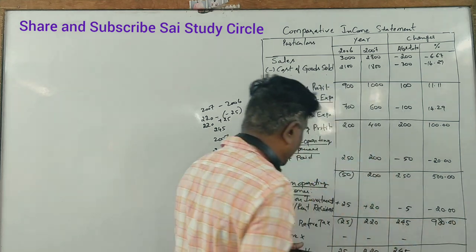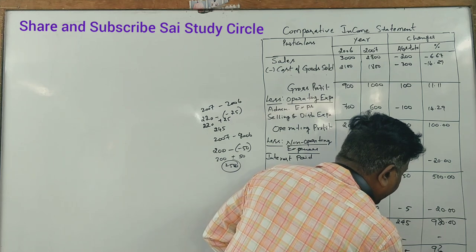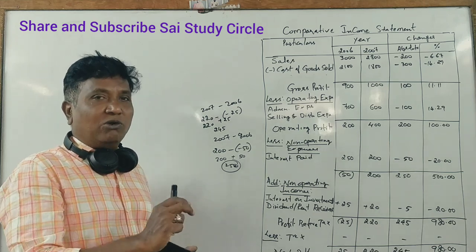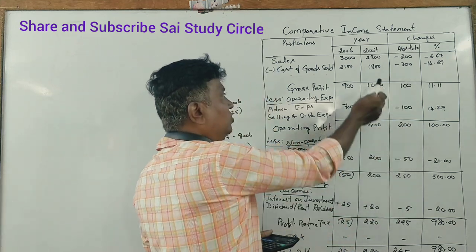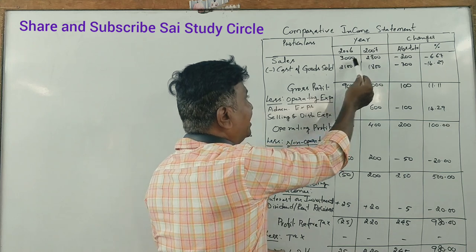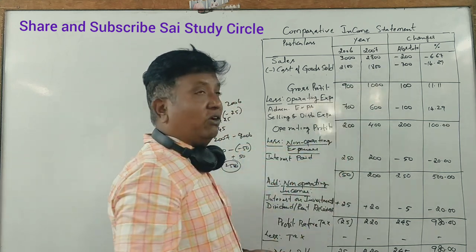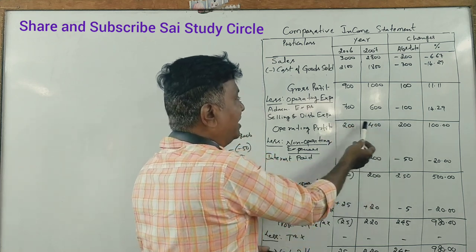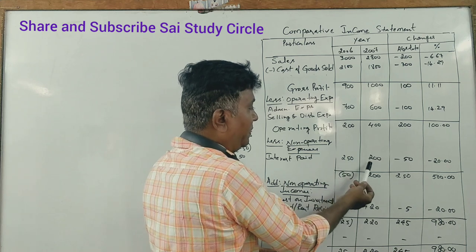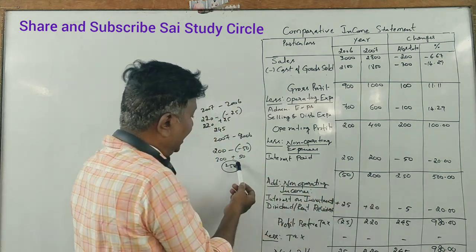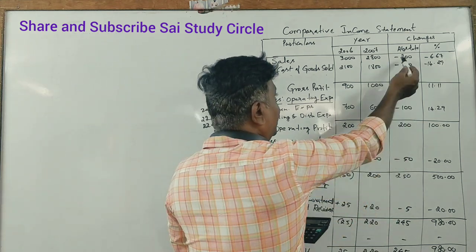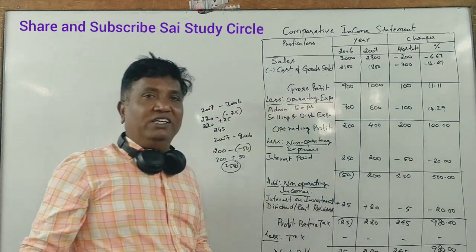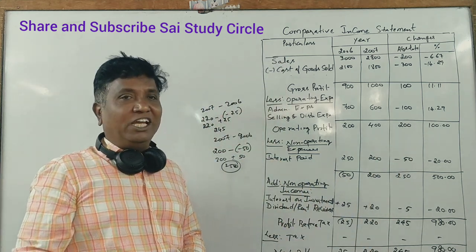Now the profit is a simple question. Numbers mark: absolute column — 2007 minus 2006. 2,800 minus 3,000 is minus 200. 1,800 minus 2,100 is minus 300. Gross profit: 1,000 minus 900 is plus 100. 600 minus 700 is minus 100. 200 minus 200, 200 minus 250, 200 minus 150 — so put the plus and minus correctly. Divide by the base year number into 100 to get the percentage. Plus is plus, minus is minus — keep that clear.